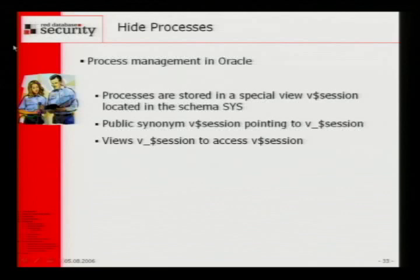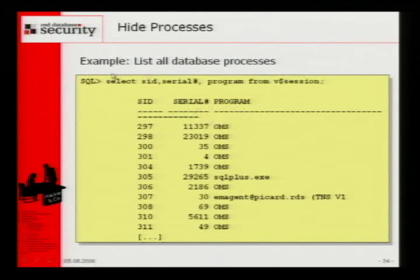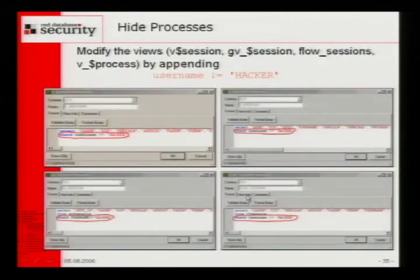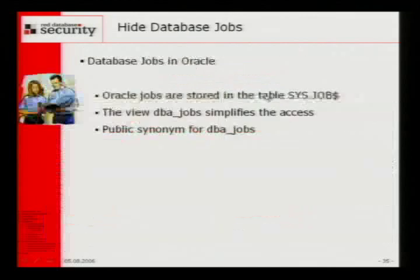Now we can hide processes — it's the same game. We have different views for sessions in Oracle. With select SID, serial number, program from V$SESSION, we get a list of running sessions. By doing modifications in four objects, we can hide this information from typical select statements or user interfaces. One problem is that when you apply a security update or database patch set, Oracle quite often recreates the views, and our invisible user is gone. That's why it's useful for an attacker to create a database job that checks once a day if the modification still persists, and if not, redoes it — so we can survive database updates.